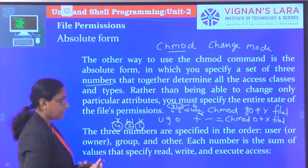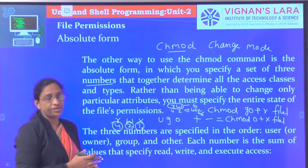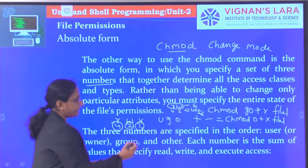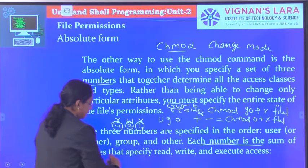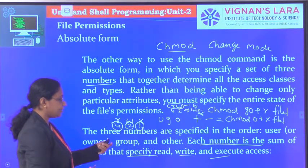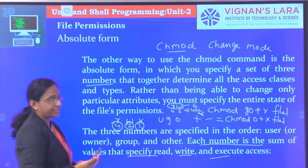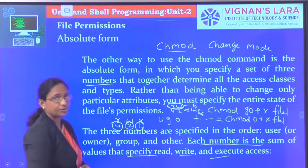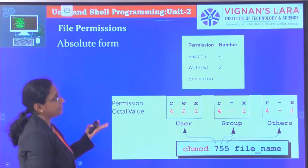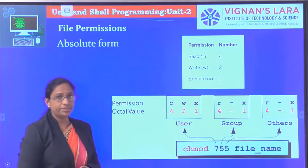These three numbers — 4, 2, 1 — together determine all the access classes and types. The three numbers are specified in order for user, group, and others. Each number is the sum of the values that specify read, write, and execute access. For example, if you want read and write permission, that is 4 plus 2 equals 6. If read is 4, write is 2, and execute is 1, then 7 means read, write, and execute.